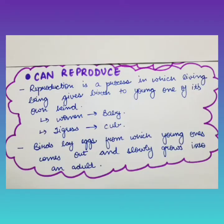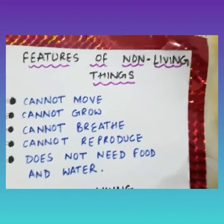Plants inhale carbon dioxide from their surroundings and in turn give out oxygen. The last feature is: living things can reproduce. Reproduction is a process in which a living being gives birth to a young one of its own kind. For example, women give birth to a baby, a tigress gives birth to a cub, and birds lay eggs from which young ones come out and slowly grow into adults.